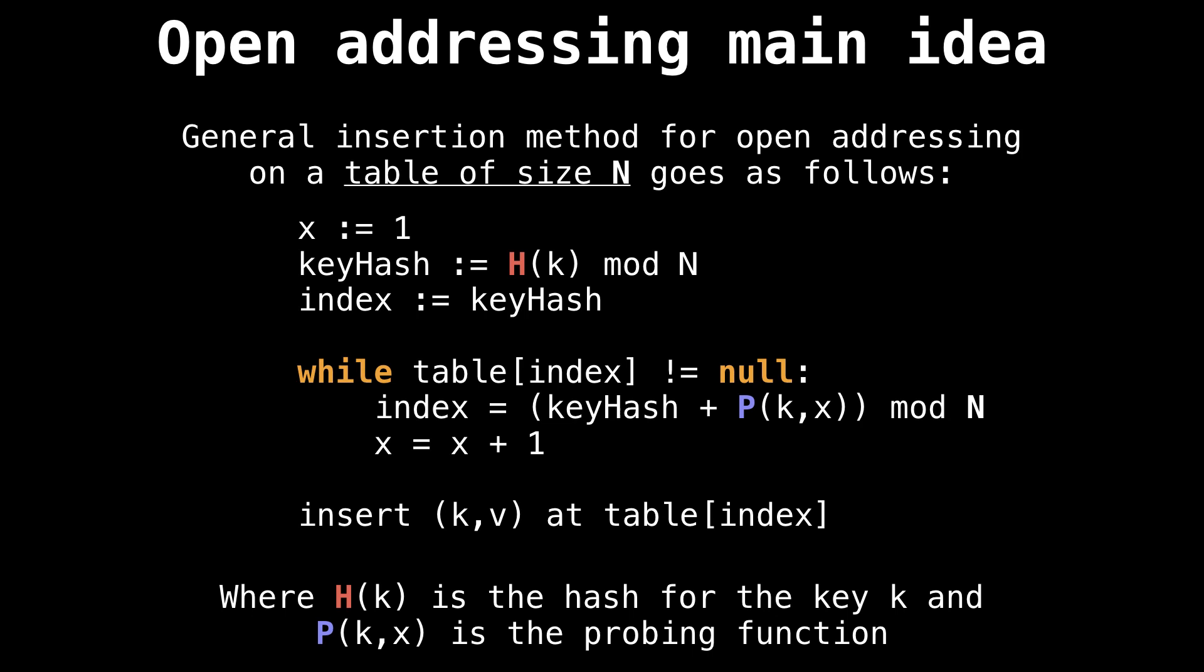Then we compute the key hash and that's going to be our first index we're going to check. We're going to loop while we're unable to find a free slot, meaning the table at that index is not equal to null so it's already occupied.